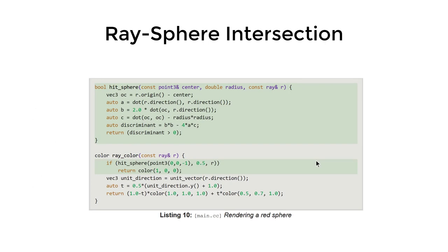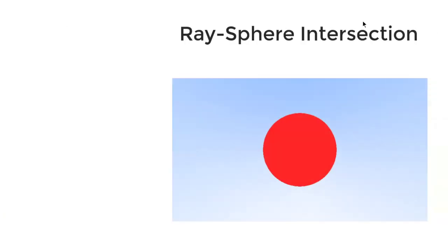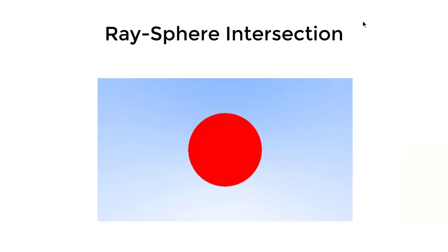So the code is just calculating the discriminant and then we hard code the color. If our discriminant is greater than zero, we hard code the color red. That means if we intersect with the sphere, we will show red color. Otherwise, we still show our background color. And after that, we get the final image like this.